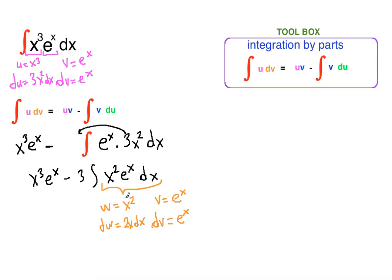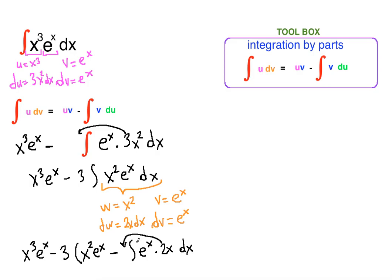We are differentiating u and integrating dv. Rewriting, we have x cubed e to the x minus 3 times the result of applying IBP to x squared e to the x: that gives x squared e to the x minus the integral of v du, where v is e to the x and du is 2x dx. This leaves us with the integral of x e to the x dx.